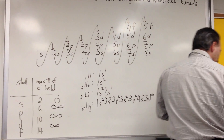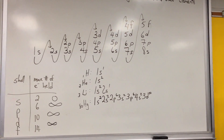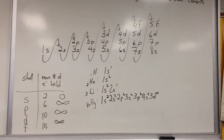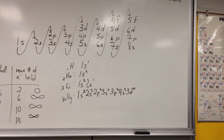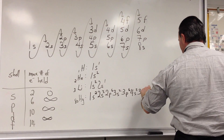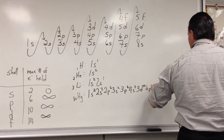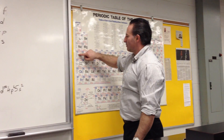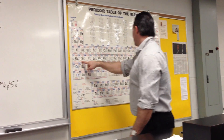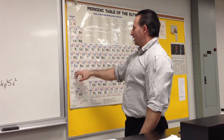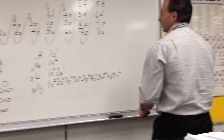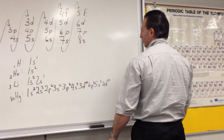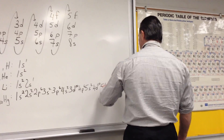Continuing: 3d10, 4p6, 5s2. If we look at the S block and count down the periods — period 1, 2, 3, 4, 5 — 5s2 will bring us right here. Mercury is further down, so we're going to find mercury right after 6s. Continuing: 5s2, 4d10 traverses the whole transition metal block, then 5p6, 6s2. Now we're here.